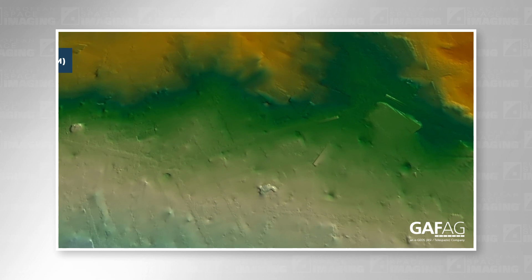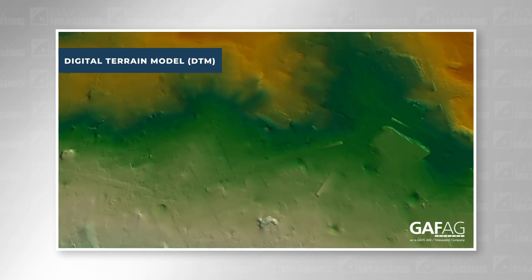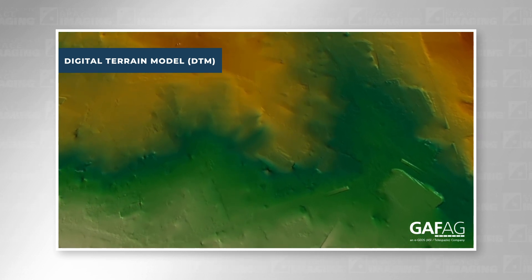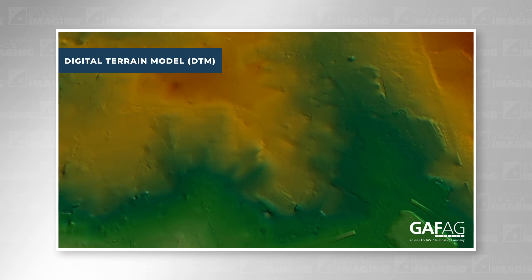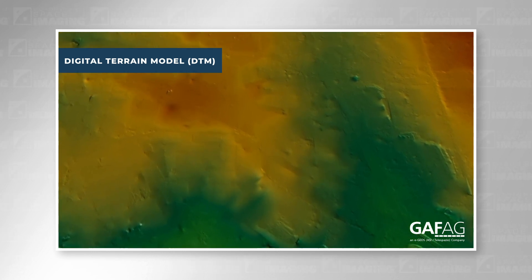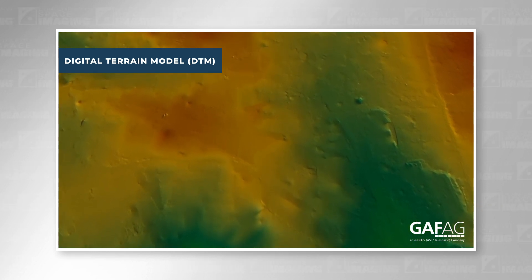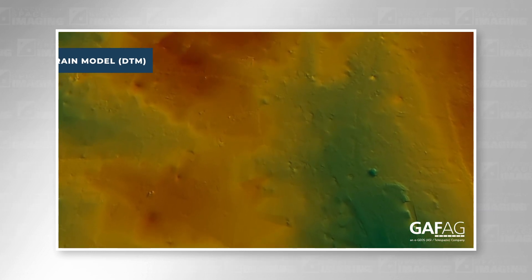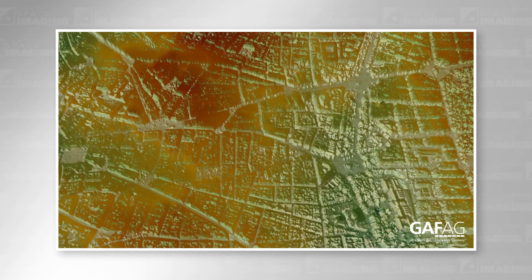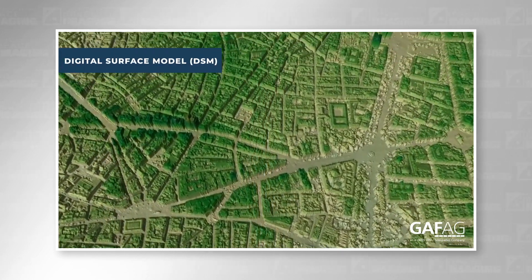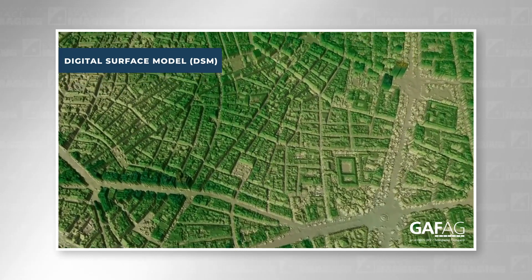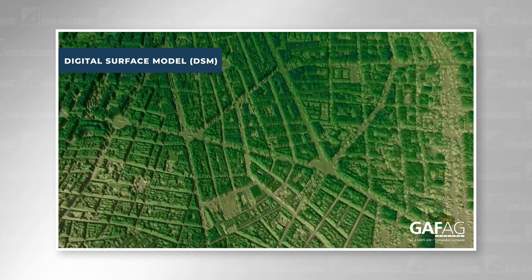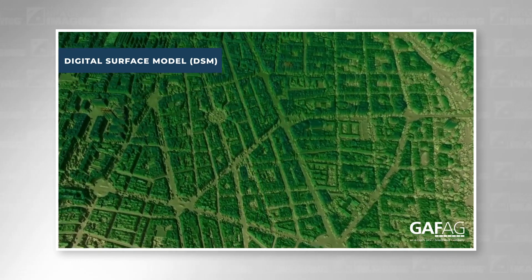A digital terrain model, or DTM, might have different definitions depending upon where you live, but in general it's a bare earth model — anything above the surface such as vegetation or structures won't be included. Common applications of DTMs include hydrology and mapping for mining or construction projects. A digital surface model, or DSM, includes not only the bare earth but all vegetation and structures, providing an extremely accurate representation of the world as it actually is.